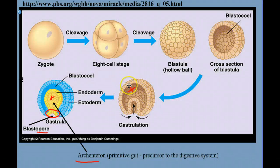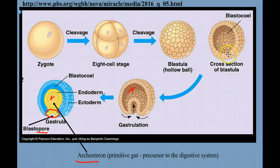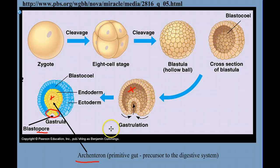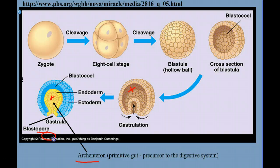Early in animal development, we start out as a single cell. That cell divides and eventually ends up as a hollow ball of cells — this is just one layer of tissue. But during the process of gastrulation, that ball of cells rolls in on itself. This process is called gastrulation, and it produces a cavity called the archenteron, which is a primitive gut — the precursor to the digestive system. The opening to that cavity is called the blastopore.